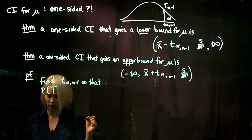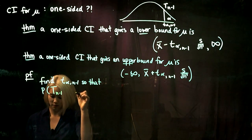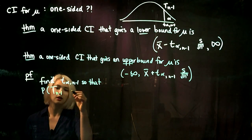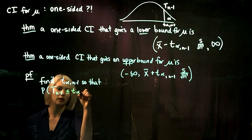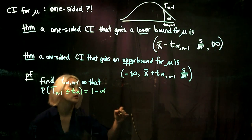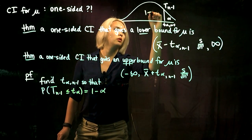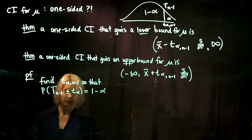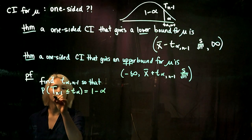We find t_alpha with n minus 1 degrees of freedom such that a t-distribution with n minus 1 degrees of freedom is less than or equal to t_alpha equals one minus alpha. So we have alpha in the upper tail and one minus alpha in the lower tail.